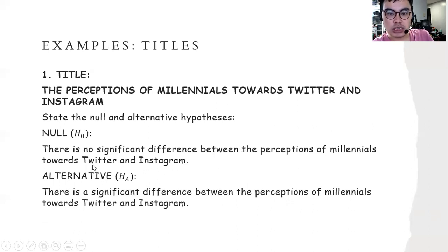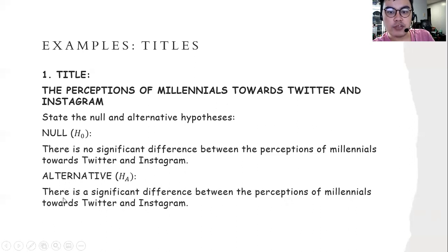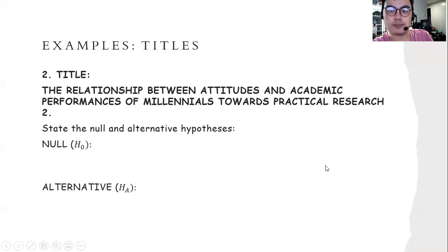So can you see the difference? When we say null, there is no significant difference; when we say alternative, there is a significant difference. This is for comparative research titles.